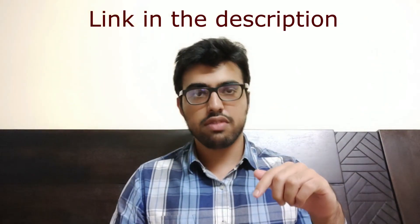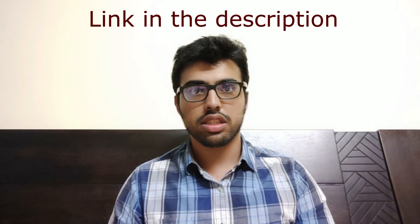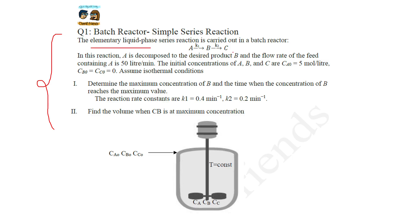Let's look at the question — it's a question you're already familiar with if you've been following our channel. You can either pause the video or access the PDF version saved in the drive. We have an elementary liquid phase reaction A gives B gives C, and what we had to do was determine the maximum concentration of B, the time at which the concentration of B reaches a maximum value, and we also need to find the volume when Cb is at maximum concentration.